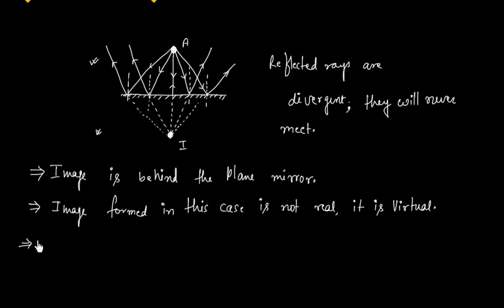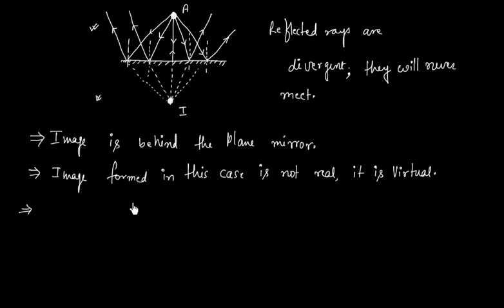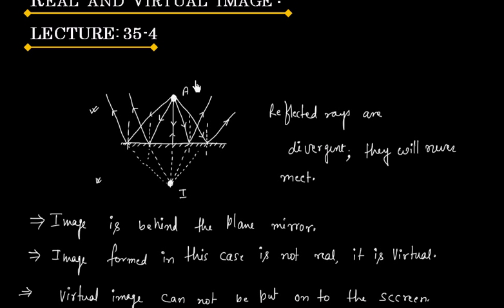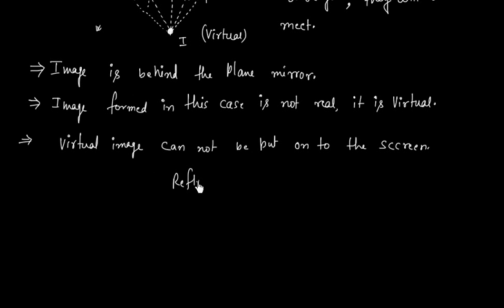Another important point: since the image is behind the mirror, we cannot put this image onto a screen. So a virtual image cannot be put onto a screen. In this case, the object is real and the image is virtual, and the reflected rays are divergent.